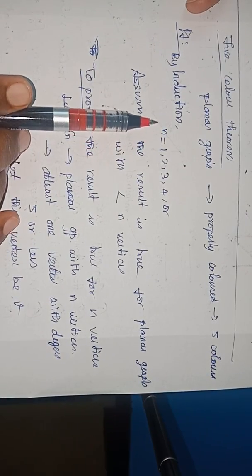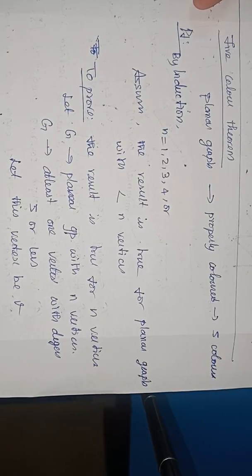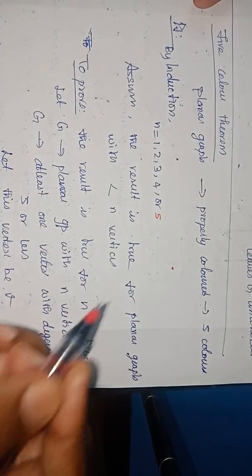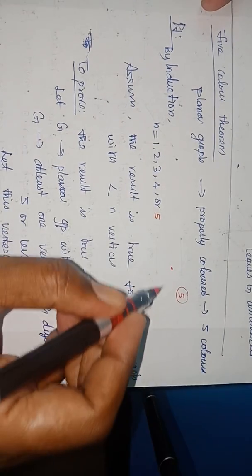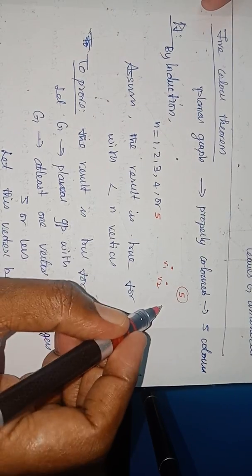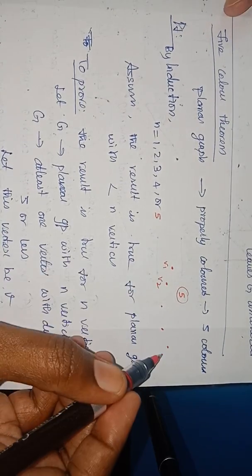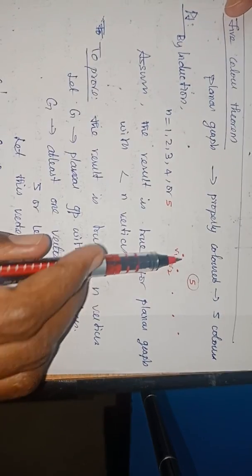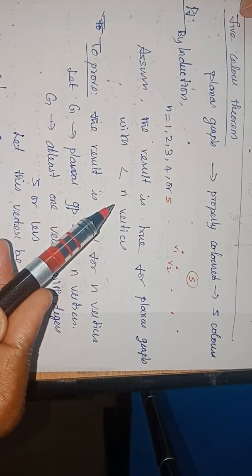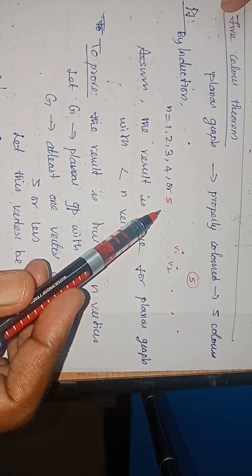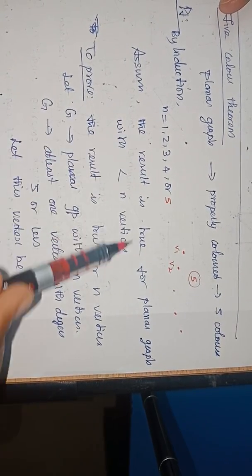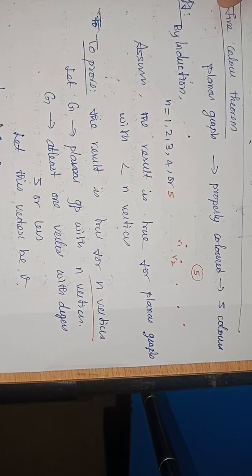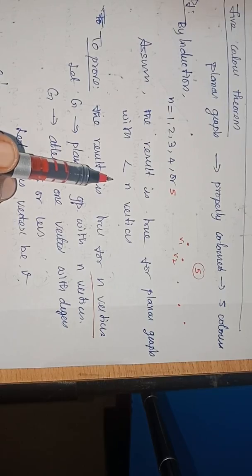In the method of induction, first we prove all trivial cases. Suppose a graph contains 1, 2, 3, 4, or 5 vertices — it can be colored using any of the five colors, giving each vertex a different color, which is a proper coloring. After proving the trivial case, assume the result is true for all planar graphs with fewer than N vertices, and prove the statement for N vertices.